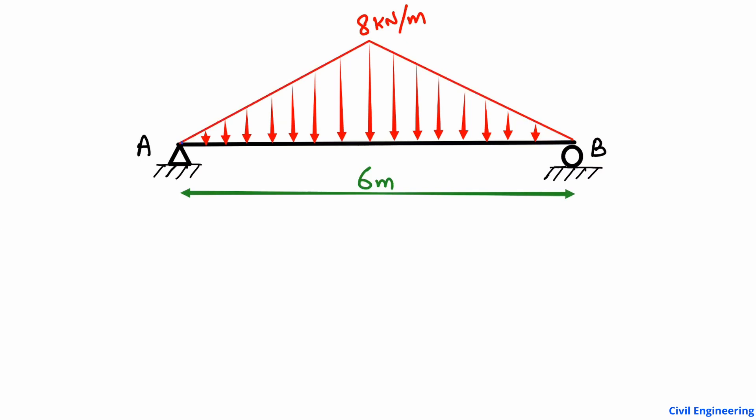We need to find the support reactions and draw the shear force diagram for this beam. I will go through easy steps — please follow these steps to find the support reactions and draw the shear force diagram for this kind of loading. The first step is to find the area of this loading. Since it is a triangular load, we use the triangle area formula: half base into height.